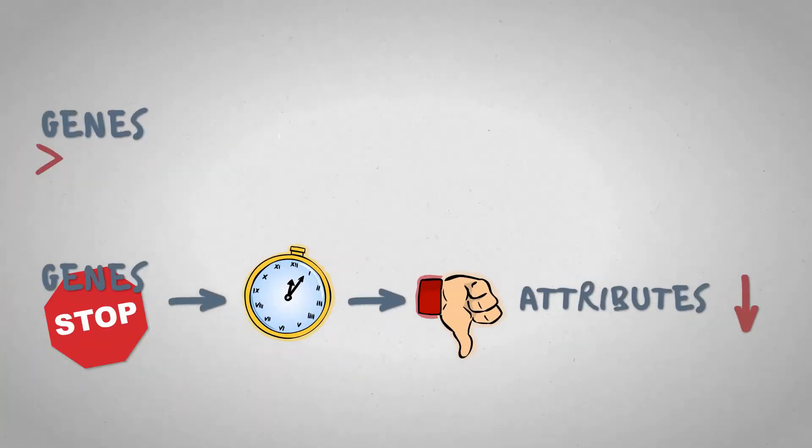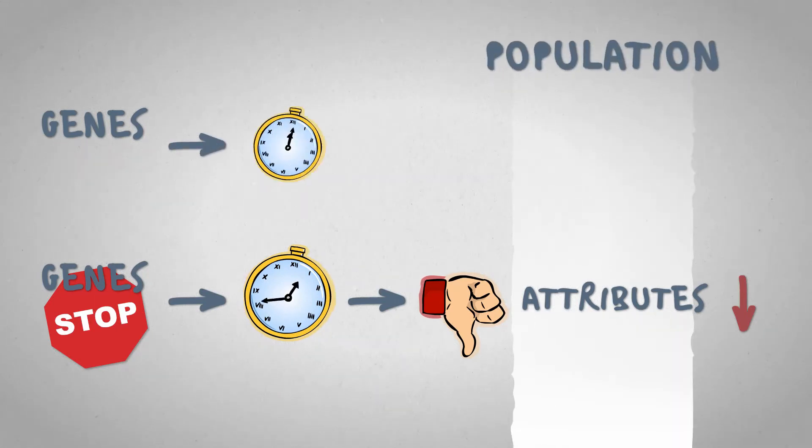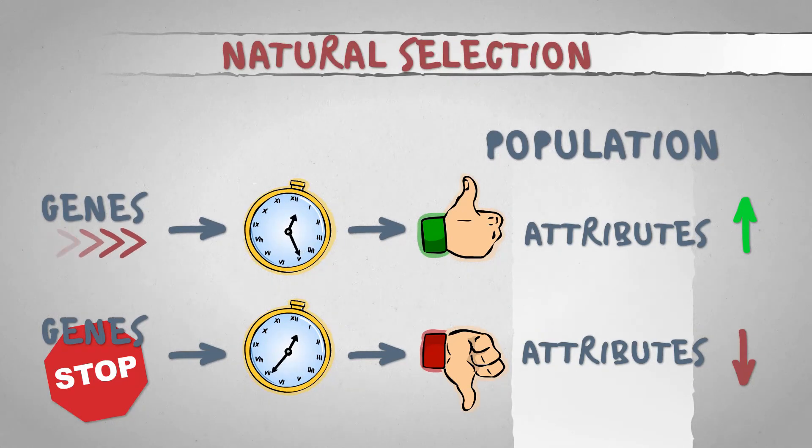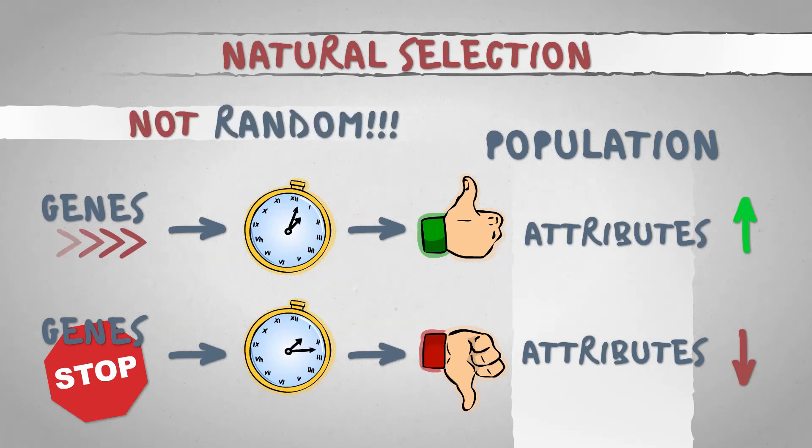Over time, therefore, unfavorable characteristics slowly disappear from the population, while favorable ones stay around. This process is called natural selection and, unlike mutation and genetic drift, it's most definitely not random.